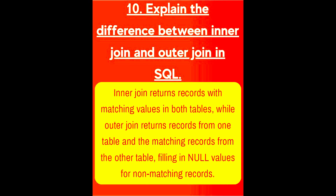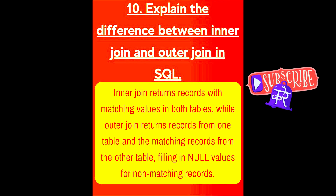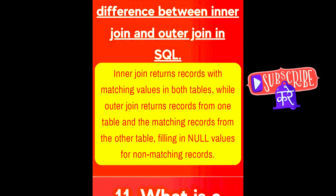Next question is, explain the difference between inner join and outer join in SQL. Inner join returns records with matching values in both tables, while outer join returns records from one table and the matching records from the other table, filling in null values for non-matching records.